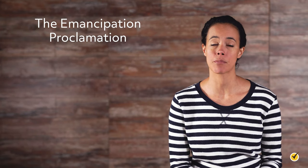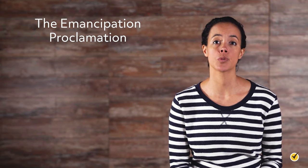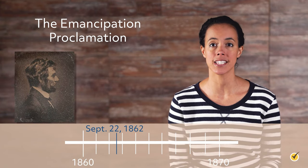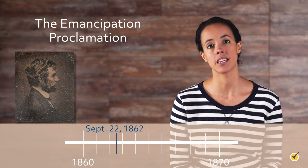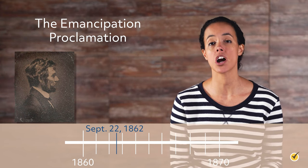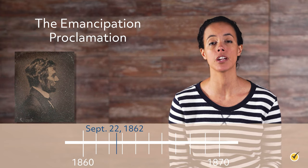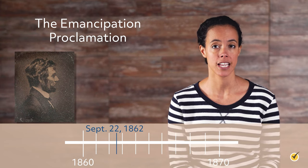Part moral rallying point, part strategic war measure, the Emancipation Proclamation is one of the most important documents in American history. Its issuance by President Abraham Lincoln on September 22nd, 1862, marked a major turning point in the American Civil War. In the document, eradicating slavery became a concrete goal of the Union and its bitter military struggle with the Confederacy.